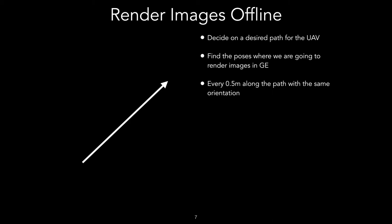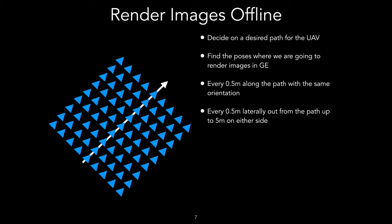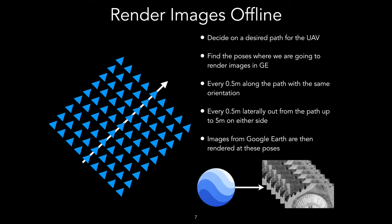As with the mutual information based approach, we first define a desired flight path and then find the poses at which we want to render the Google Earth images. We choose to render images every half a meter along the path and laterally every half a meter out from the path up to five meters on either side. Google Earth images are then rendered at these poses.